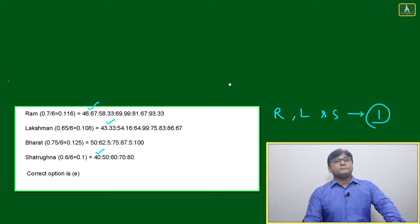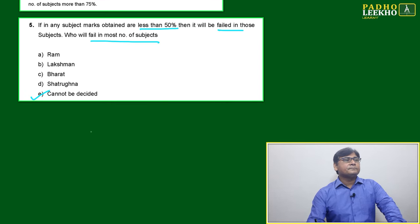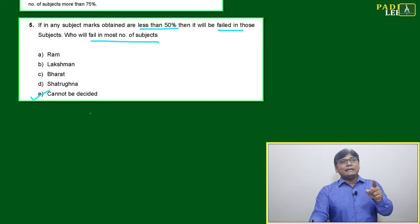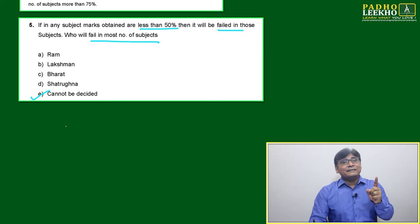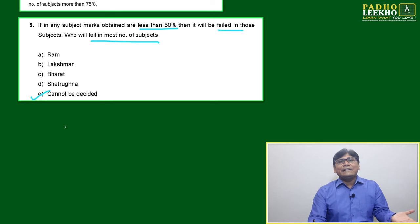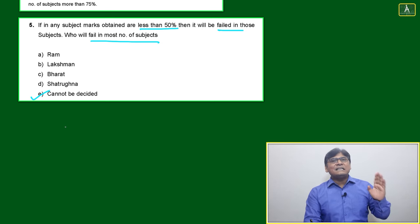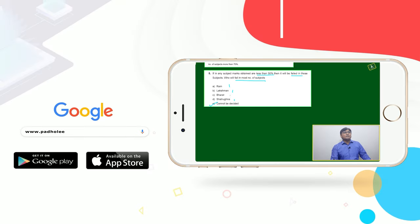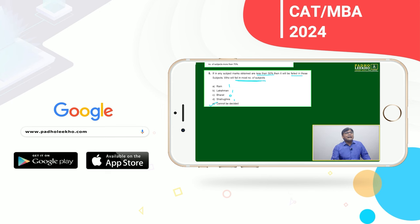Ram, Lachman, and Satrughna all failed in one subject each. Now read the answer choices carefully - it is not 'cannot be determined,' the question asks who failed in the most number of subjects. Ram is one, Lachman is one, Satrughna is one. You will not be able to decide who failed in the most number of subjects because all are failing in the same number.